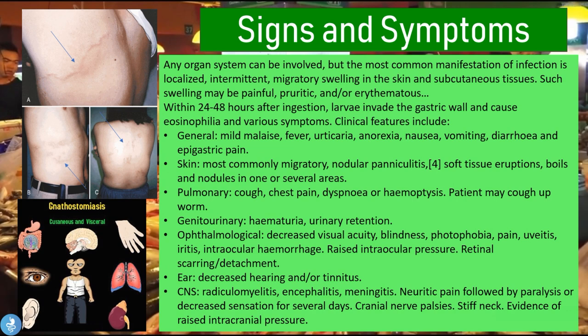Finally, the central nervous system may be involved, with patients experiencing radiculomyelitis, encephalitis (inflammation of the brain), and meningitis (inflammation of the meninges). They may also suffer neuritic pain followed by paralysis or decreased sensation for several days, cranial nerve palsies, a stiff neck, and evidence of raised intracranial pressure. As we can see, the signs and symptoms are quite vast due to this parasite's ability to infect multiple organ systems.